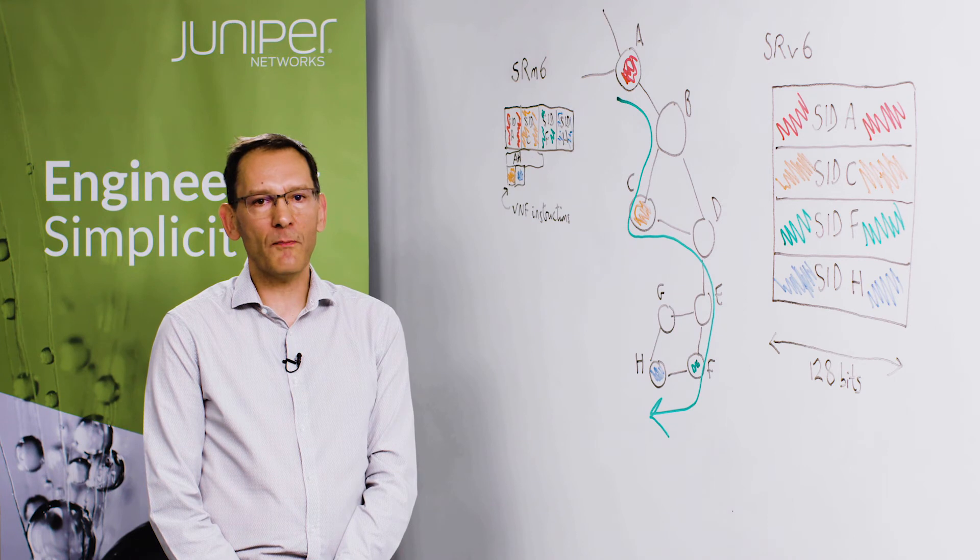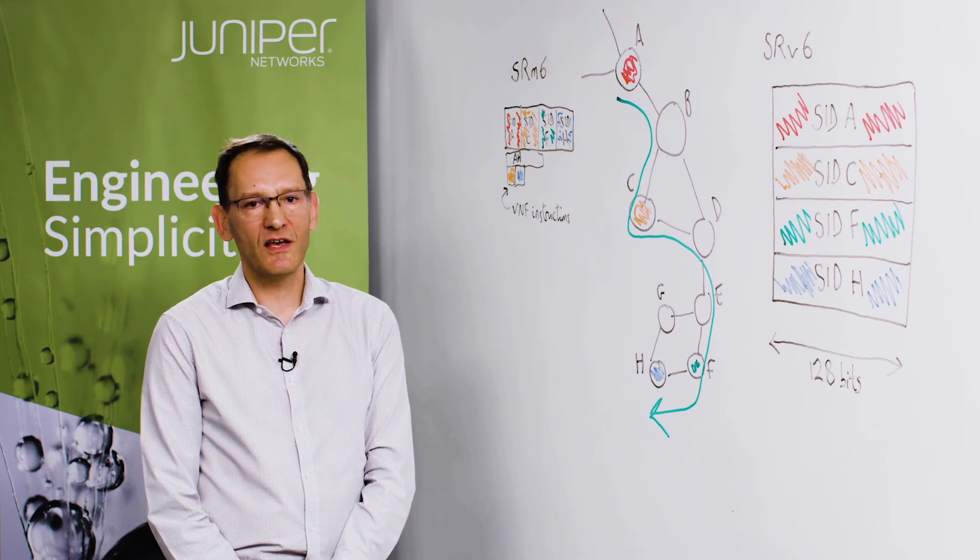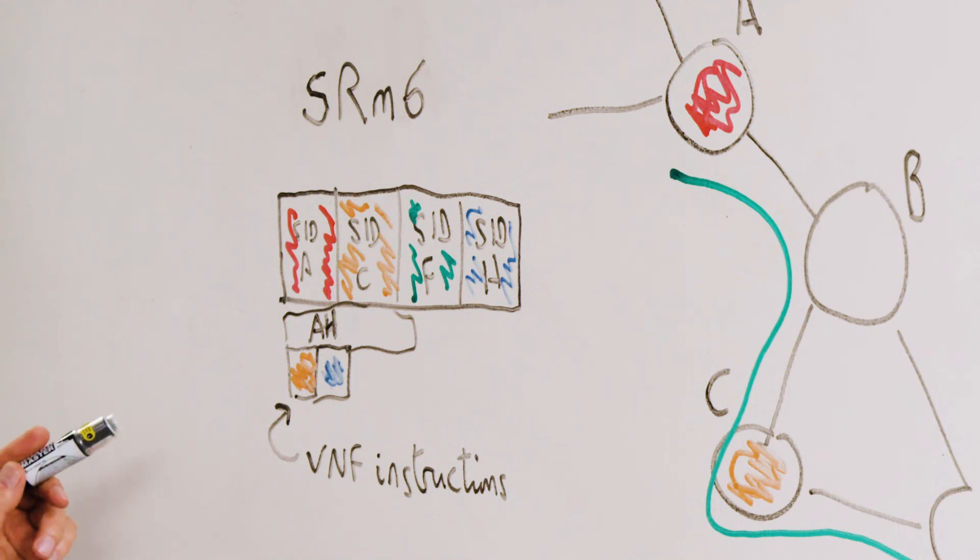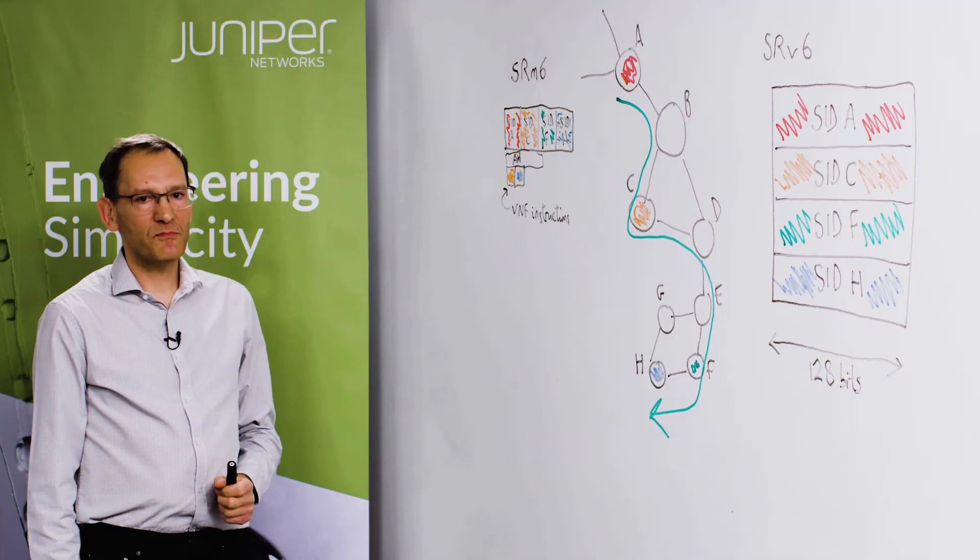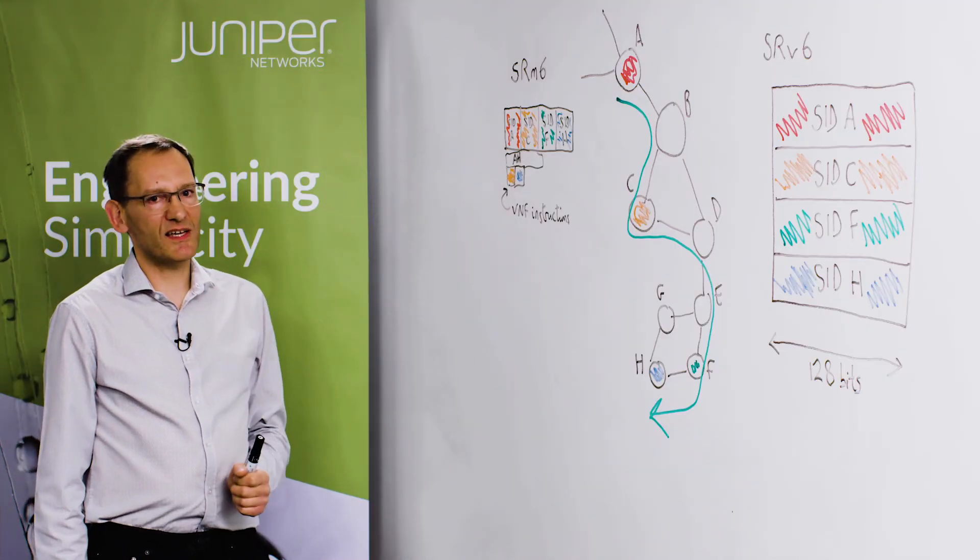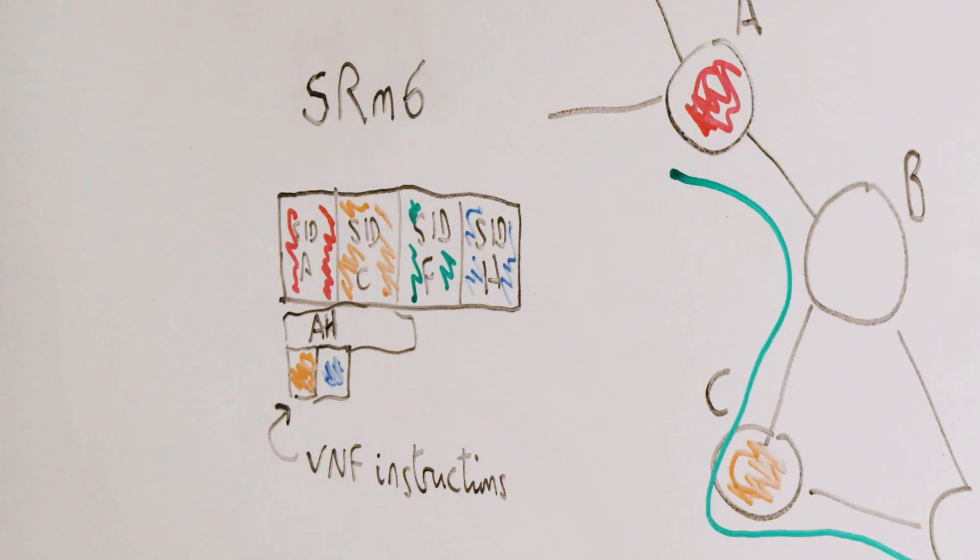And so therefore SRM6 was created in order to address these problems. So let's have a look at what SRM6 consists of. First of all, you can have shorter SIDs. These can be 16 bits or 32 bits instead of 128 bits, so they're much more bandwidth efficient. So you can see these much shorter SIDs here for the various SR hops along this chain.